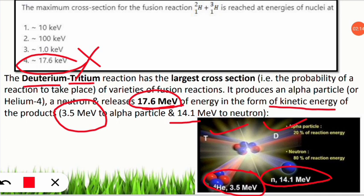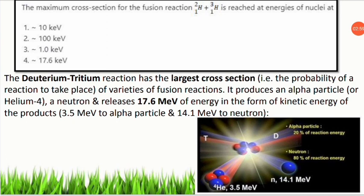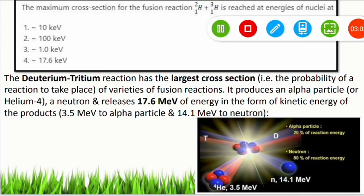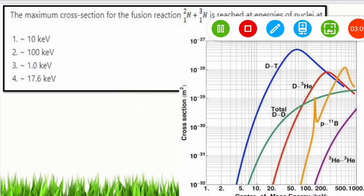The question is asking about cross-section — the probability of a reaction taking place in the fusion reaction, i.e., how much energy is required for the reaction to take place. The deuterium-tritium reaction is the most effective among all varieties of fusion reactions. The question asks about energy required, not energy released — so option four is wrong.